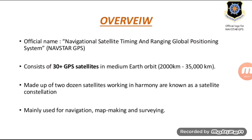Made up of two dozen satellites working in harmony, they are known as the satellite constellation, and GPS is mainly used for navigation, map making, and surveying.